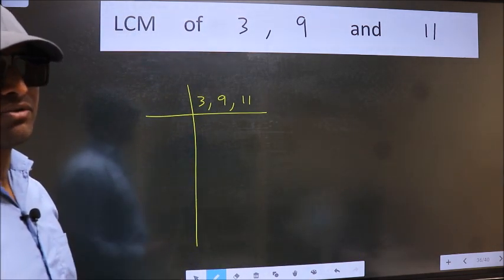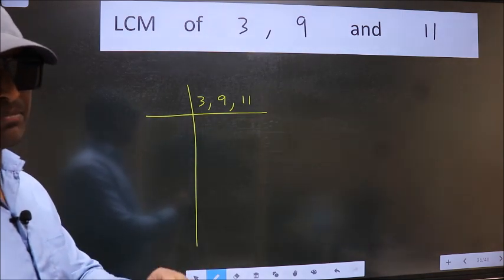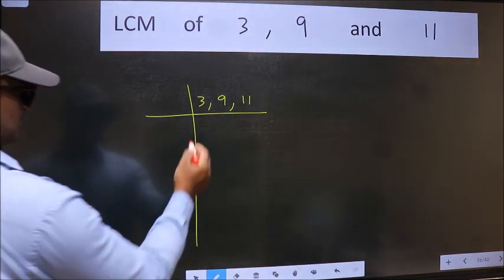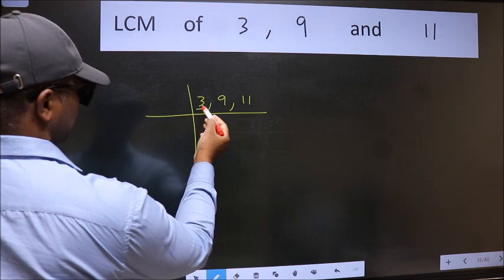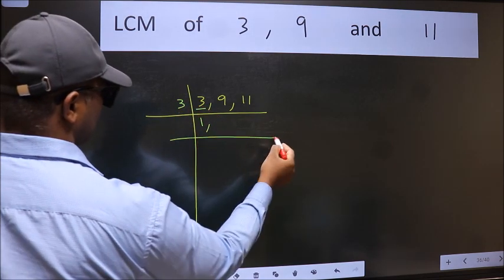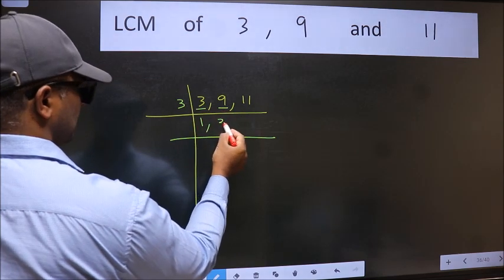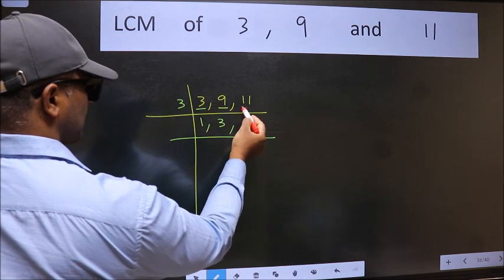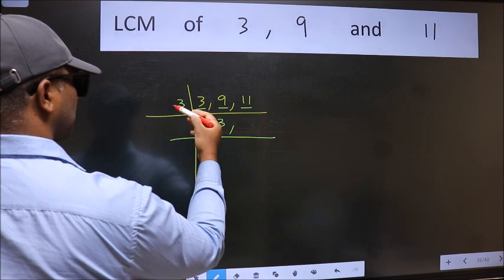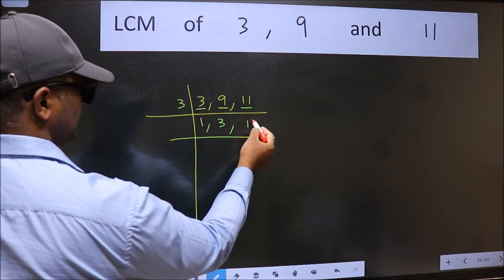Now we should focus on the first number which is 3 here. 3 is a prime number, so 3 divides 3. The other number 9, when do we get 9 in 3 table? 3×3 is 9. The other number 11, not divisible by 3, so we write it down as it is.